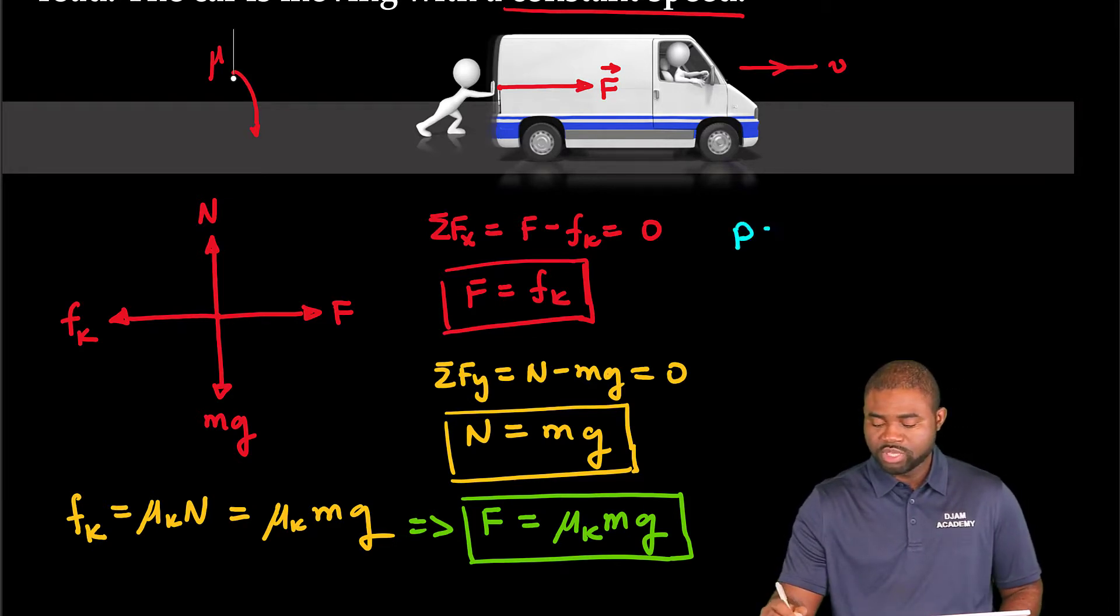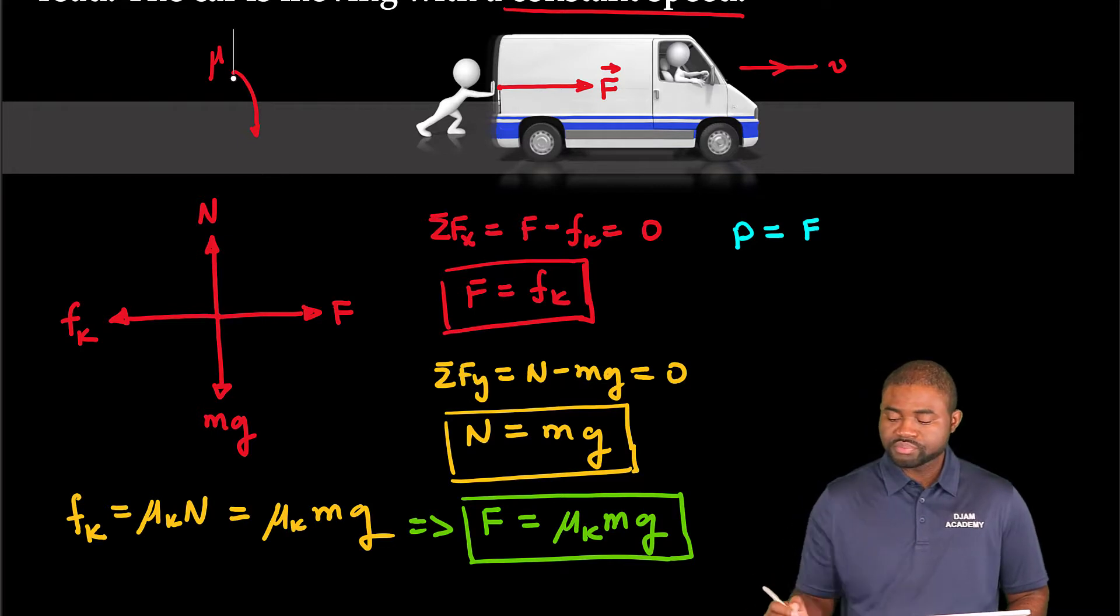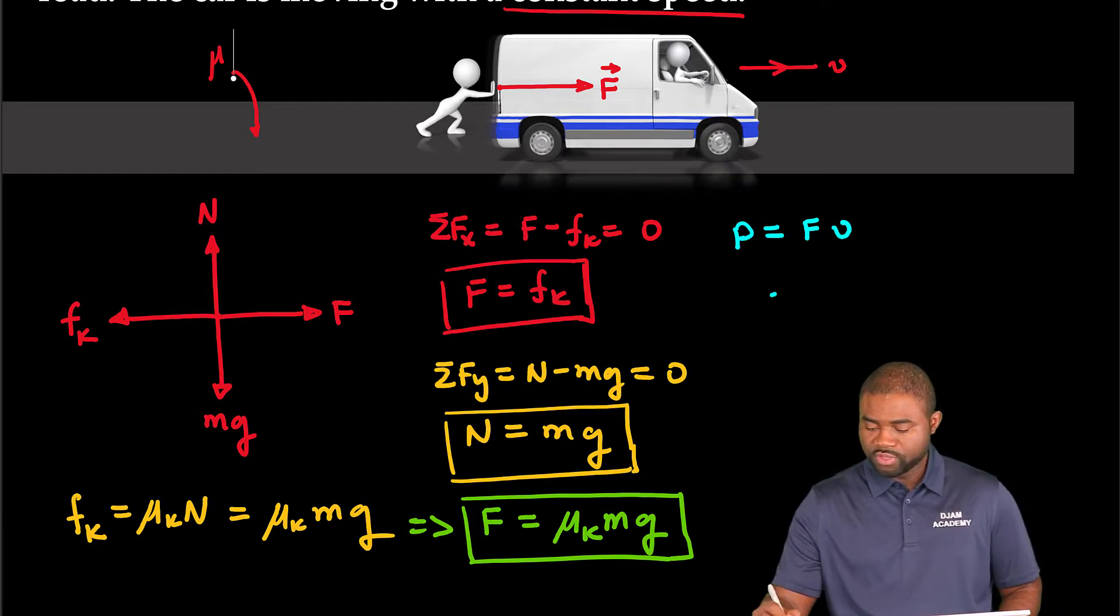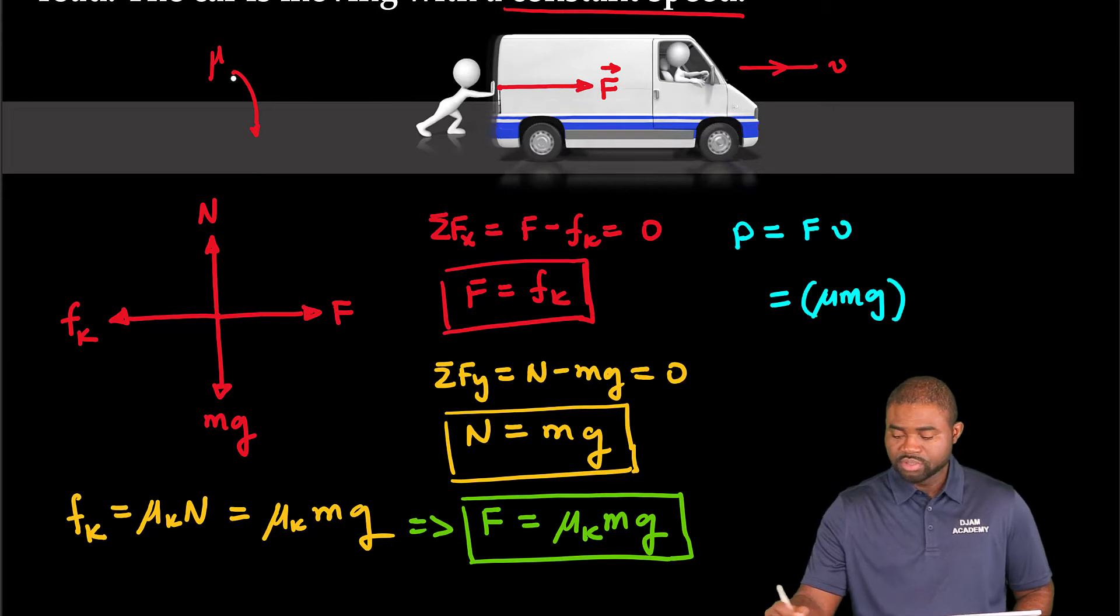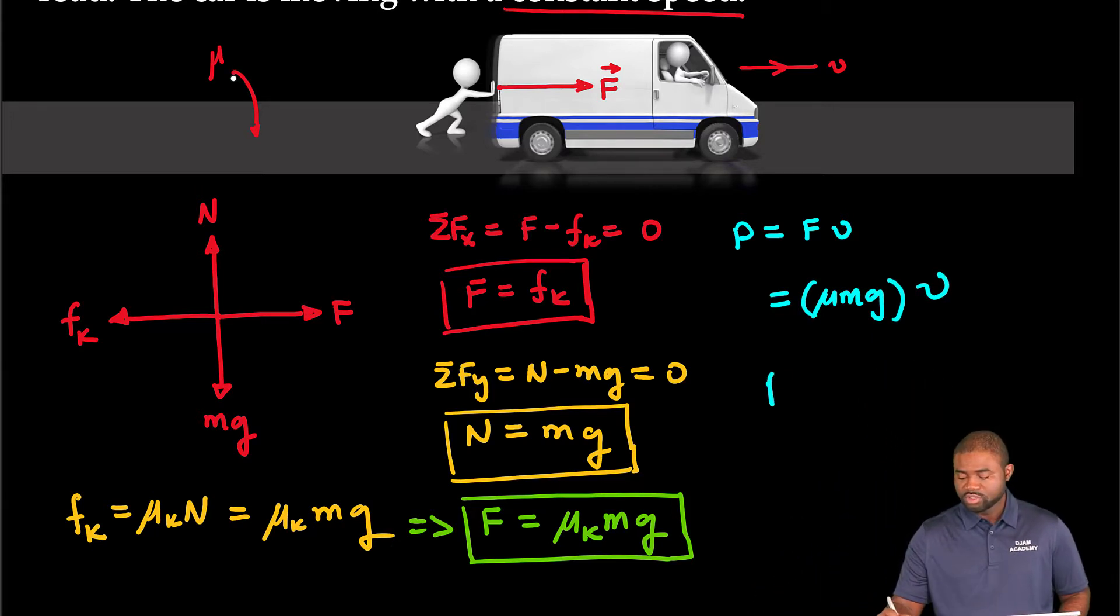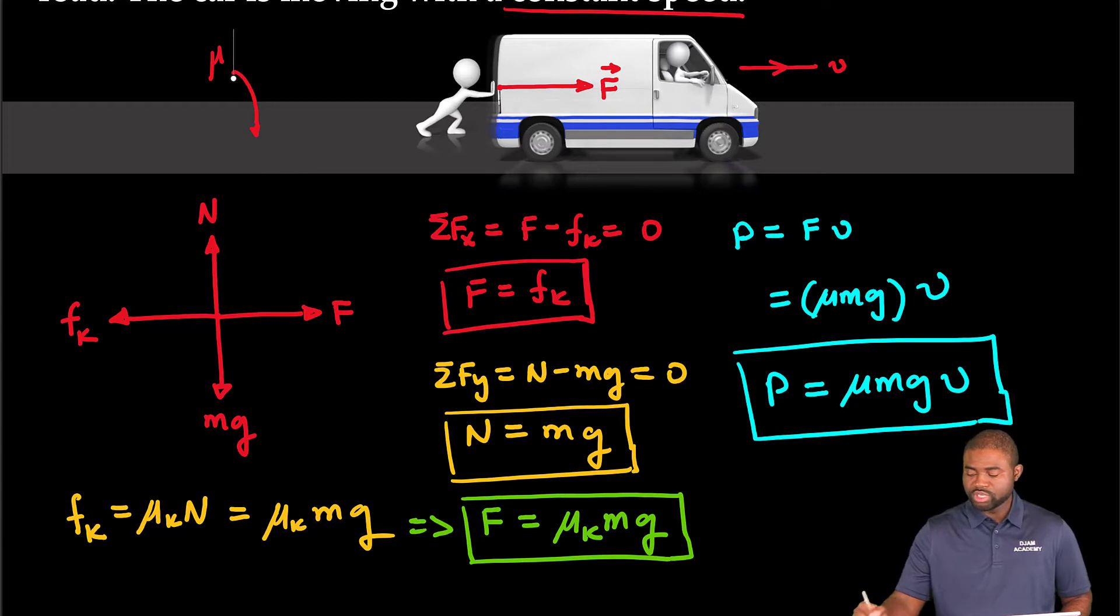So the average power P will be equal to the force that he exerts on the car multiplied by the velocity v. So this is going to be equal to μmg multiplied by v. So the power transmitted is equal to μmgv. This represents the rate at which he does work pushing the car forward.